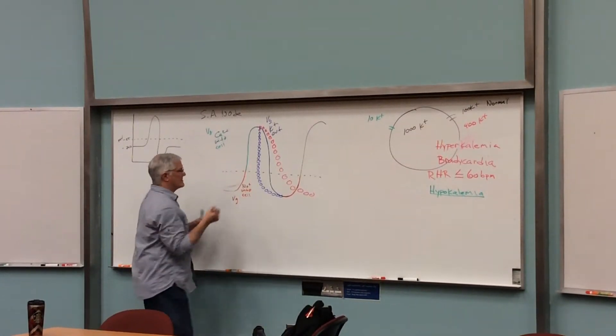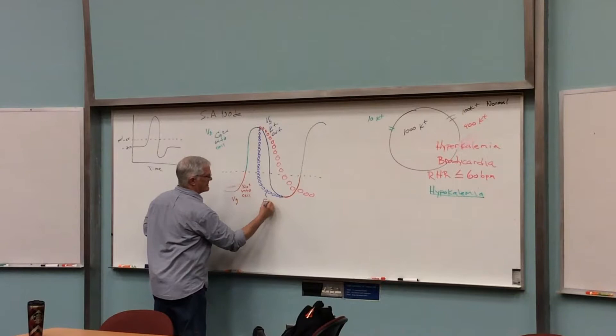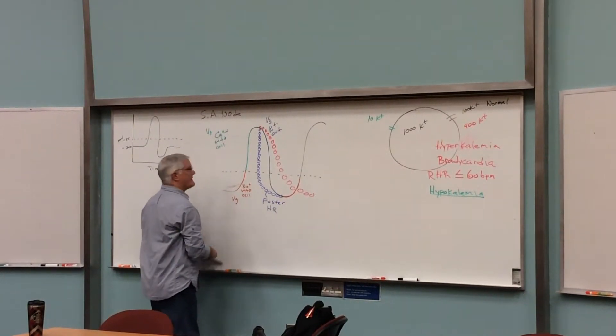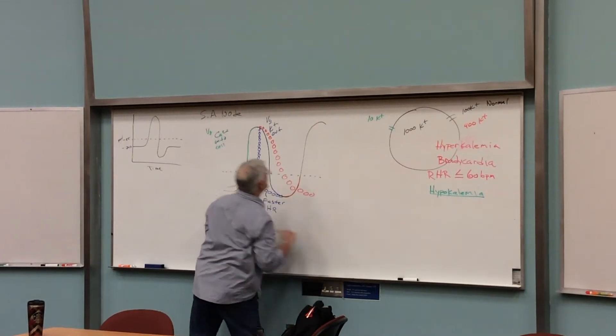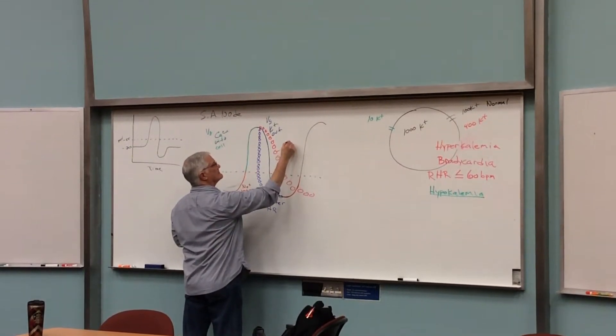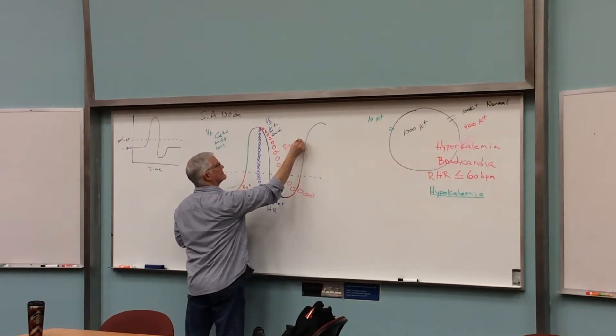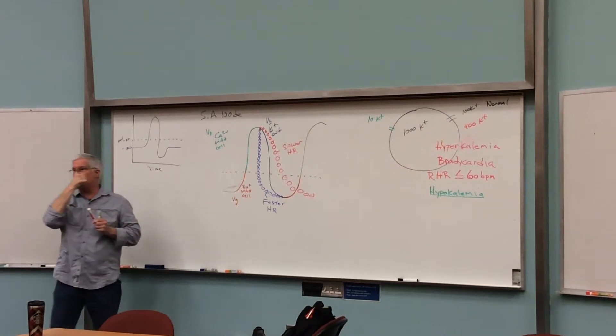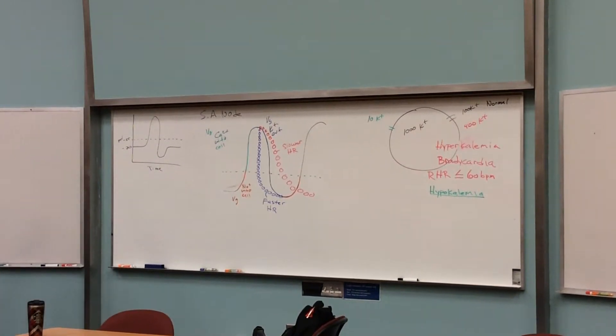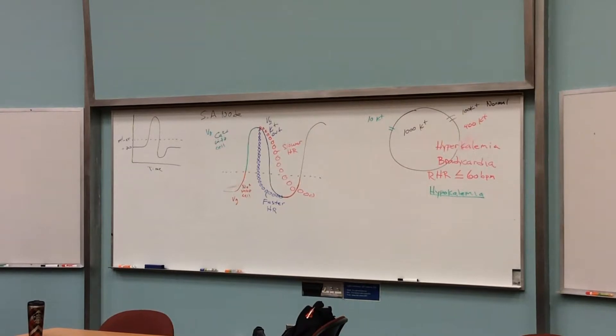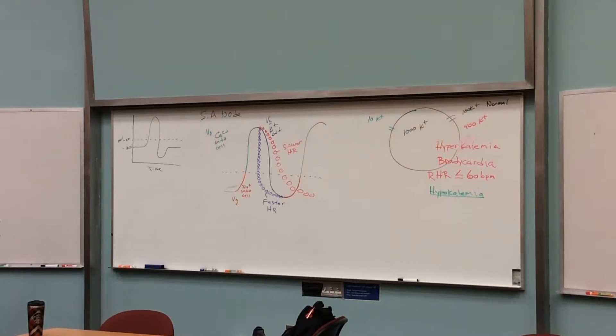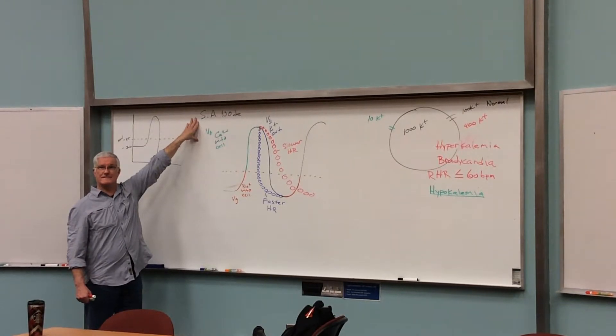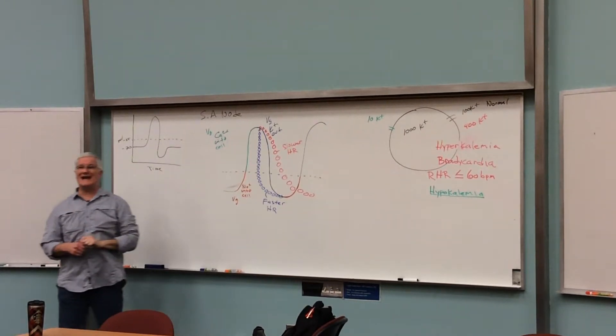Then we'll come down back here to zero. This would be a faster heart rate. And then this red one would be a slower heart rate. Any ideas how you would experience significantly lower than normal amounts of potassium in your blood?